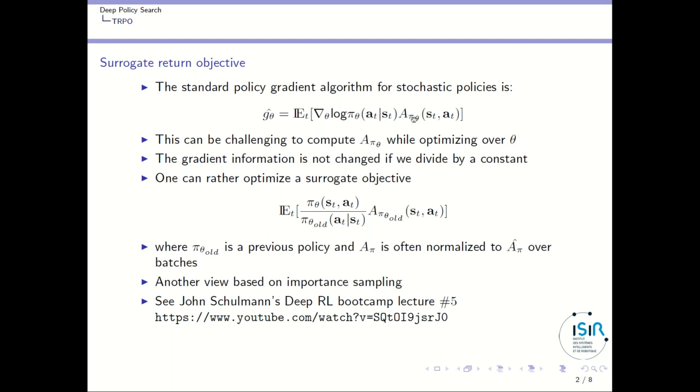So rather than optimizing this, we can rather optimize this objective where we have divided this term by this one and change the advantage function by the advantage function over the old policy. And the idea is that if we optimize using this formula rather than this one, then we will get something that is very similar to policy gradient methods. You can get another derivation of using this method based on importance sampling because here you can recognize an importance sampling term.